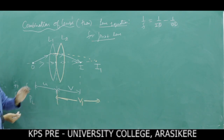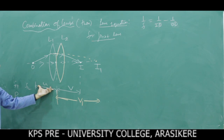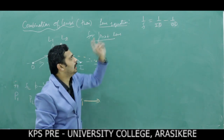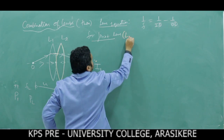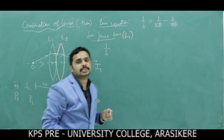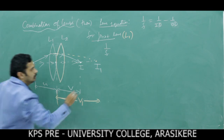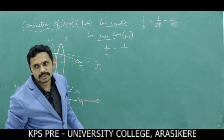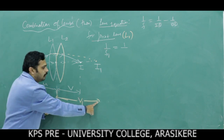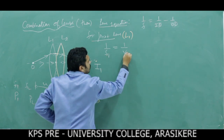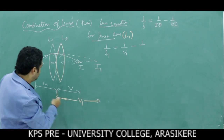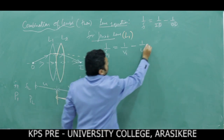This image distance is V1. For the first lens L1, applying the lens equation: 1/F1 = 1/V1 − 1/U, where V1 is the image distance and U is the object distance. This is equation 1.